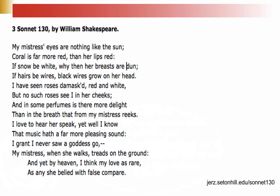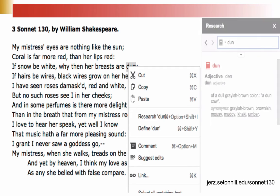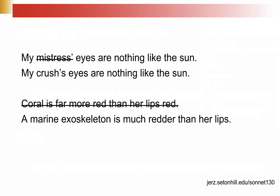When I was looking at this text in Google Docs, I used the research function to look up unfamiliar words. 'Dun' is defined as a dull grayish-brown color. 'Damask' is a woven fabric with a pattern typically used for fancy occasions. And 'to belie' is to give a false representation, or at least fail to give an accurate representation. One way to approach understanding a poem is to replace all the weird, unfamiliar words with more common, accessible words.